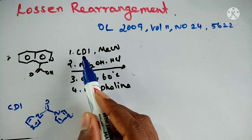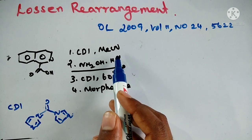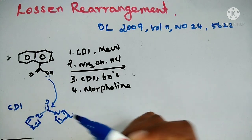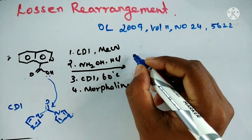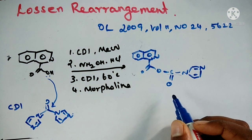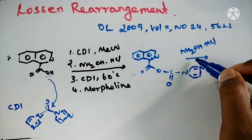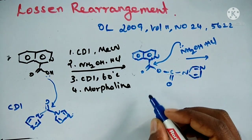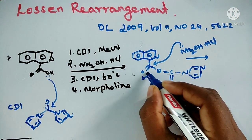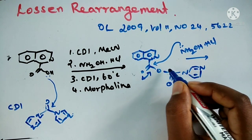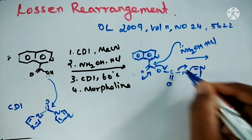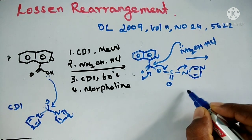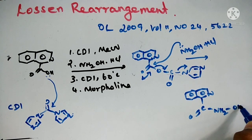First step: CDI (carbonyl diimidazole) in acetonitrile solvent will attack the carbonyl position, leading to formation of an activated intermediate. Next step: react with hydroxylamine hydrochloride — it will attack the carbonyl, followed by elimination of carbon dioxide and diimidazole, leading to formation of hydroxamic acid.